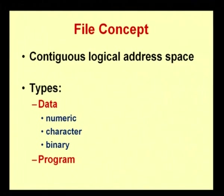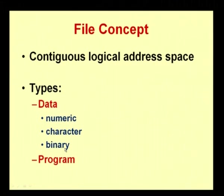What is a file? A file is a contiguous and logical address space. Files are broadly classified into two types: data files and program files. A data file has numeric values, character values, as well as binary values.